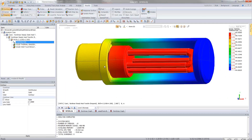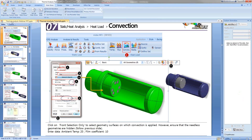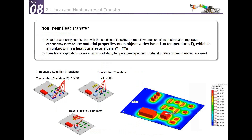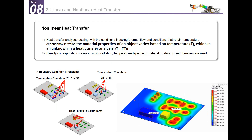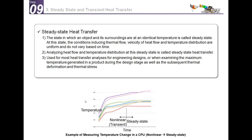Now let's talk about nonlinear heat transfer. It is nonlinear because in certain conditions the thermal flow conditions depend on temperature — material properties may vary with temperature, or the applied loads themselves depend on temperature. For example, a transient temperature boundary condition changes during the analysis, as does heat flux. I'll show how to perform this analysis shortly.